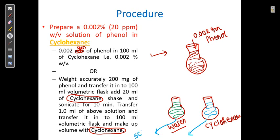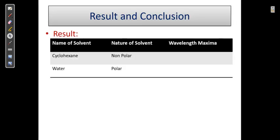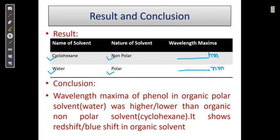In the UV instrument, use scan mode, not photometric mode. In scan mode you can get a spectrum, identify the wavelength maxima, and write down the lambda max in the result table. The table has two entries: cyclohexane (non-polar) and water (polar), with the unit of lambda max in nanometers. For the conclusion, note whether the wavelength maxima of phenol in polar solvent is higher or lower than in non-polar solvent, and whether it shows a red shift or blue shift.